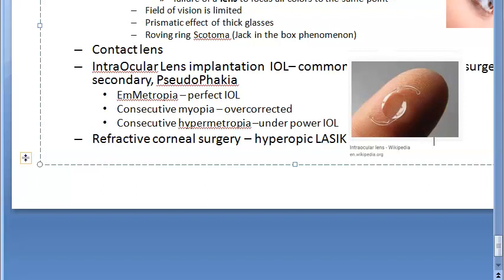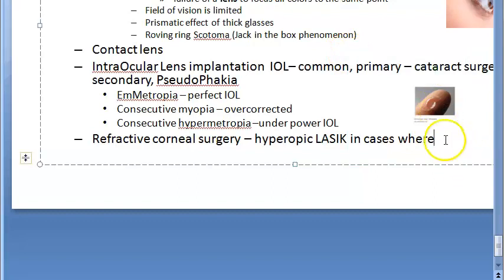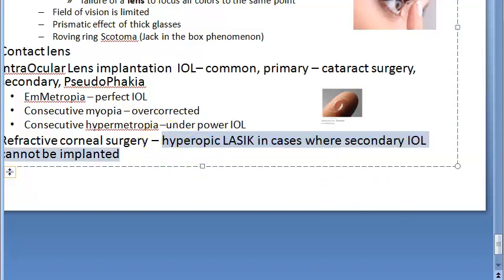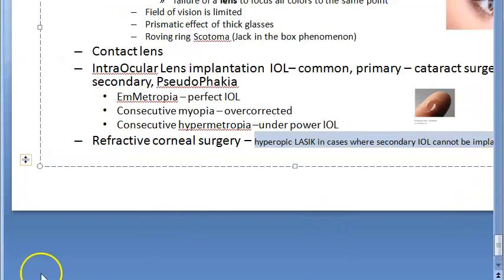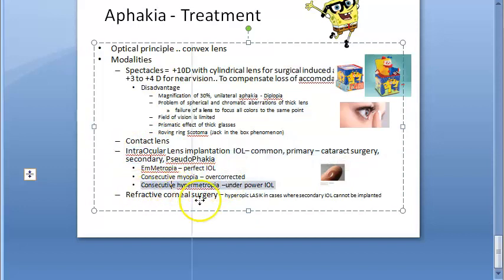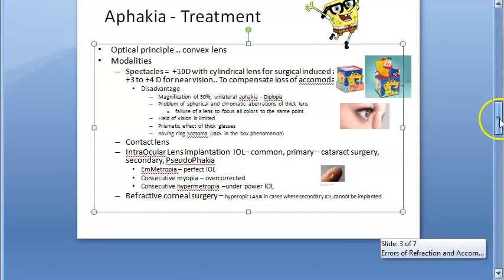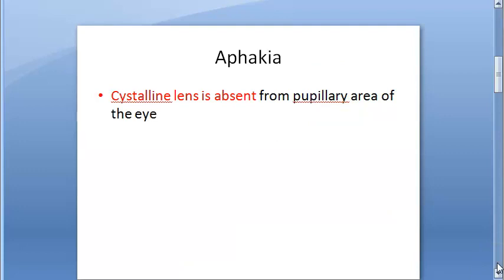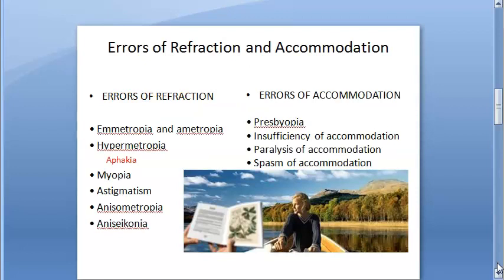In summary, the treatment for aphakia involves four options: first, give a convex lens either as spectacles or contact lens; second, intraocular lens implantation; or third, refractive corneal surgery. That completes the aphakia topic - a huge and very important examination topic.